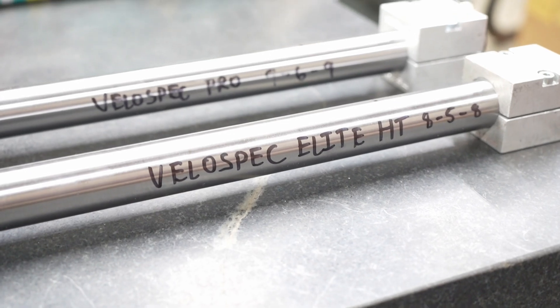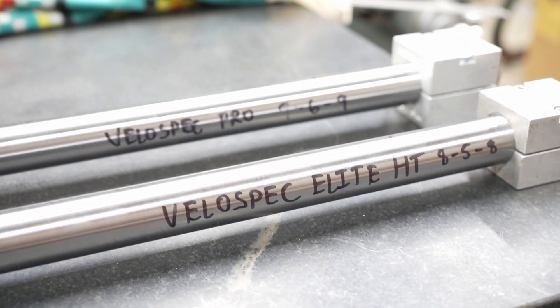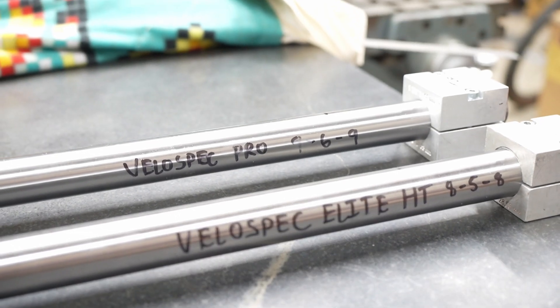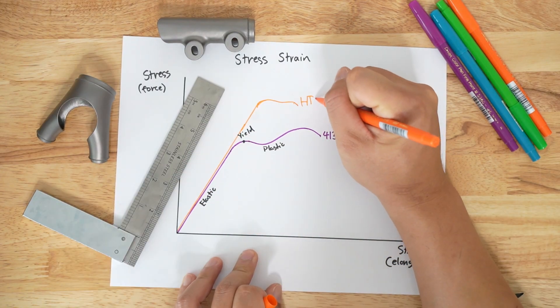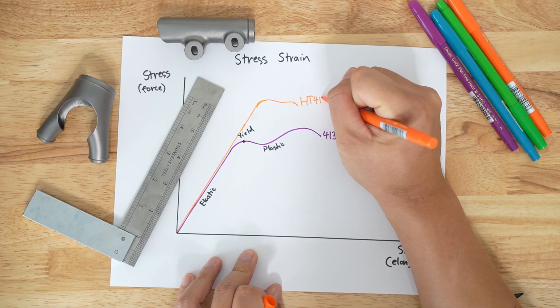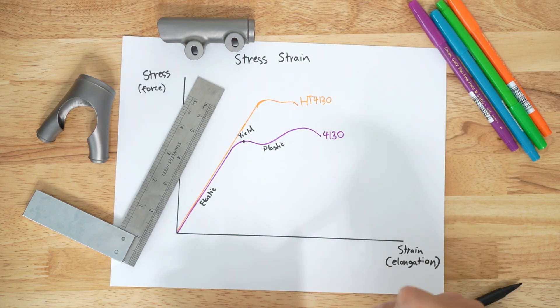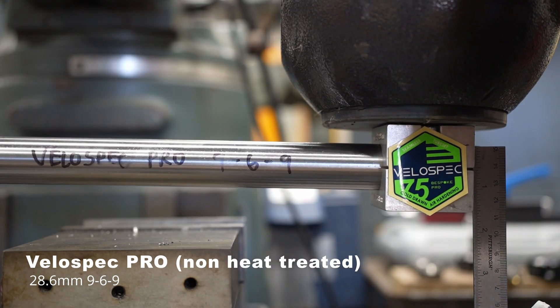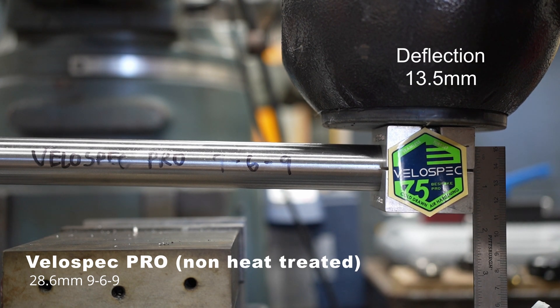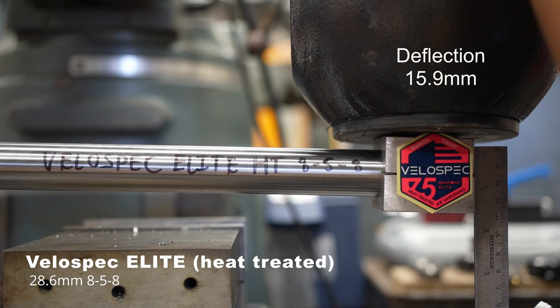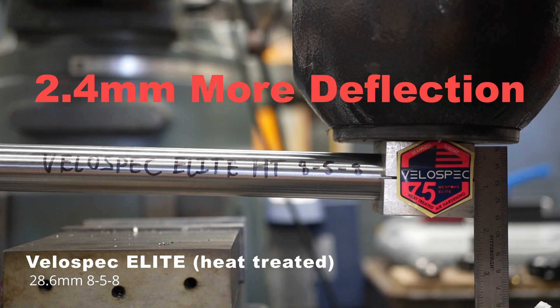Here are two 28.6mm Velospec tubes. One is hardened and the other is not. I need to emphasize again that all alloys of steel are the same stiffness, regardless if they are heat-treated or not. In practice, heat treating makes the material stronger, which allows manufacturers to use thinner butts, which actually makes heat-treated tubes more flexible.